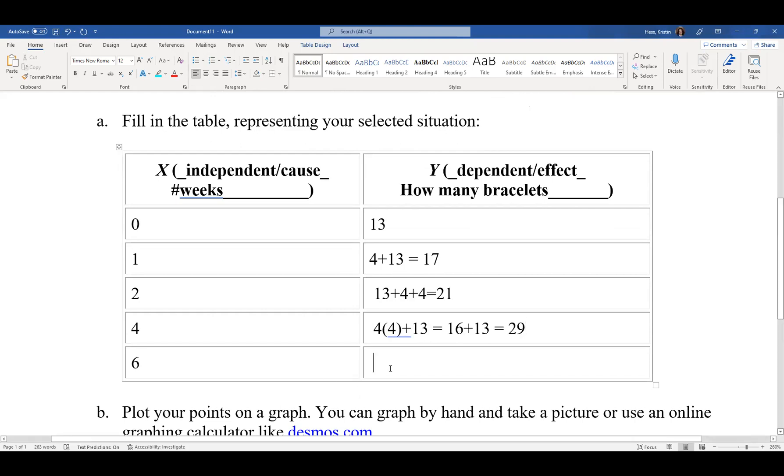And the sixth week, there were six weeks of making four bracelets made over the course of six weeks. Each week we made four, plus 13. Six times four is 24, plus 13 is going to give us 37.